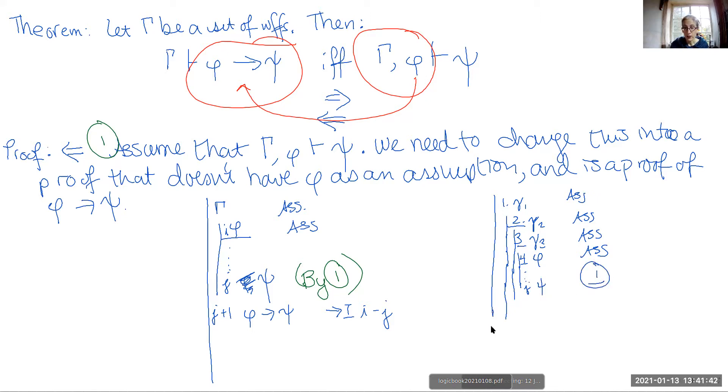The deduction theorem says, from the assumption of phi to the proof of psi, you can turn that into a conditional, just through conditional introduction. That's lines four to j.